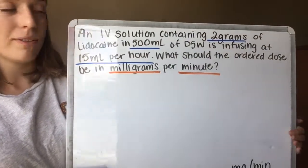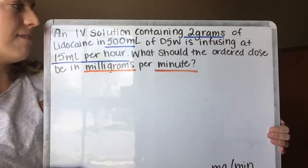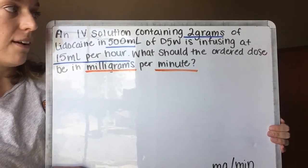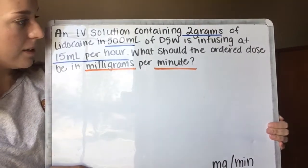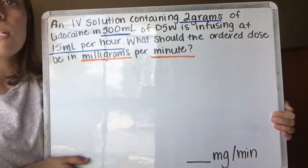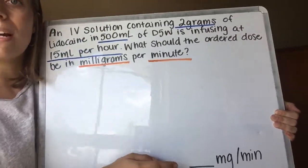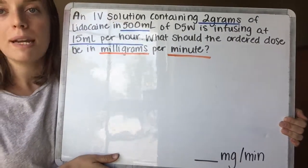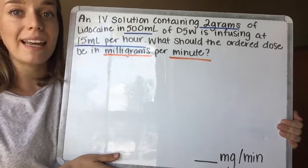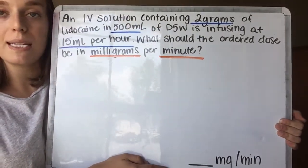All right, we got our practice problem here. I'm going to read it out loud. An IV solution containing 2 grams of lidocaine in 500 milliliters of D5W is infusing at 15 milliliters per hour. What should the ordered dose be in milligrams per minute? So I've already pulled out—before we do anything—what do we want to end up in our units of measurement. We want to end up in milligrams per minute, so we know that as we're working to cancel out different units of measurement, we want to keep these milligrams per minute. So this is what we're focusing on.